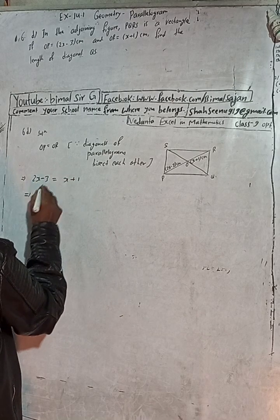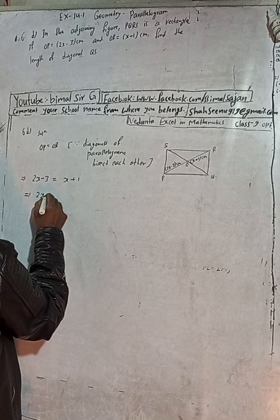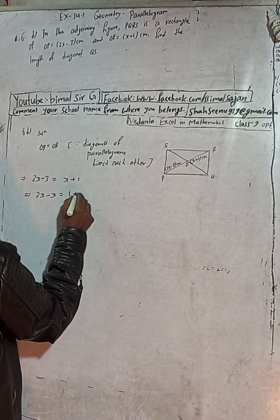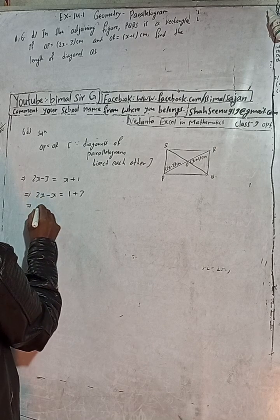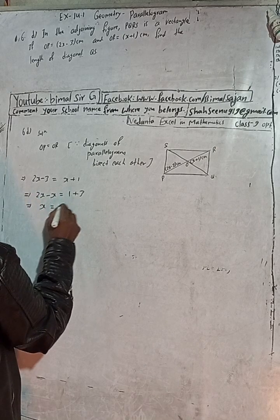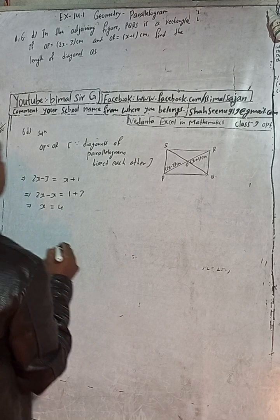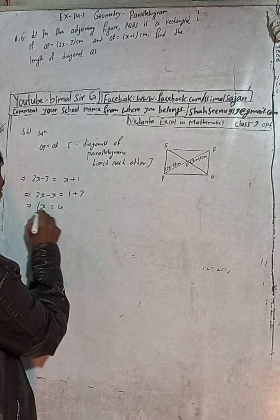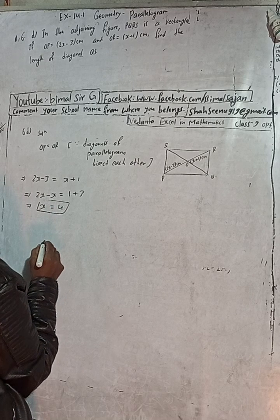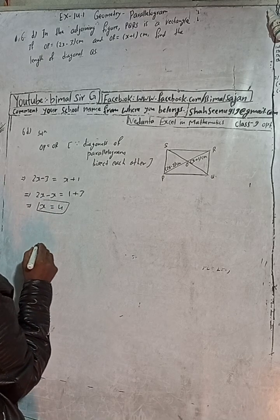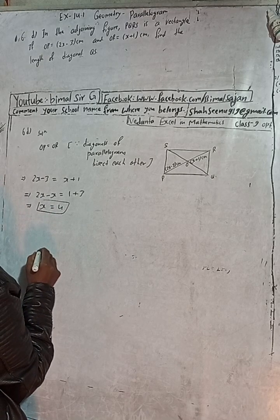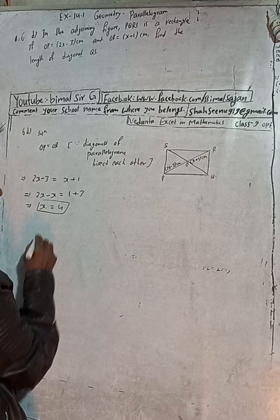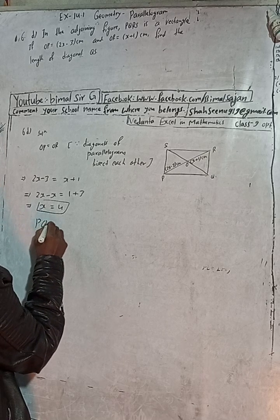Setting up the equation: 2x minus 3 equals x plus 1. Rearranging: 2x minus x equals 1 plus 3, so x equals 4.